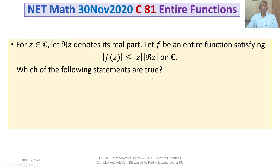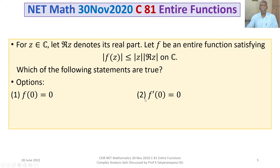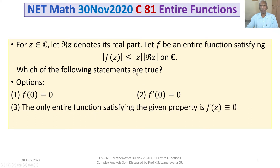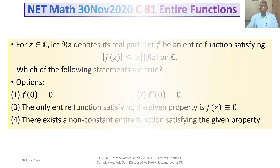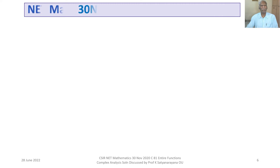Which of the following statements are true? We are given four options. Option 1: F(0) = 0. Option 2: F'(0) = 0. Option 3: the only entire function satisfying the given property is F(Z) identically equal to 0, the zero function. Option 4: there exists a non-constant entire function satisfying this given property.